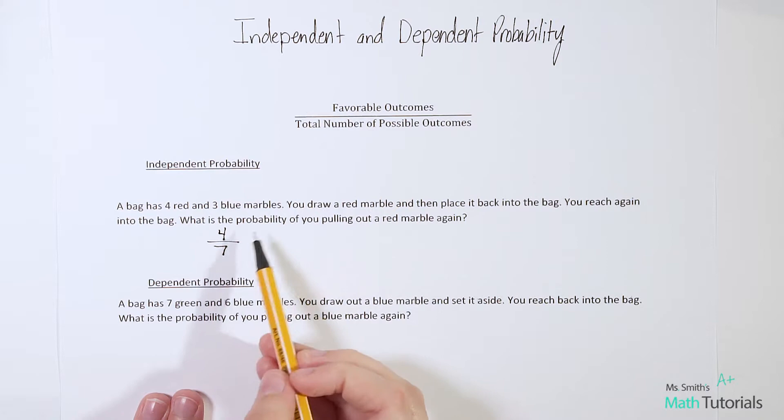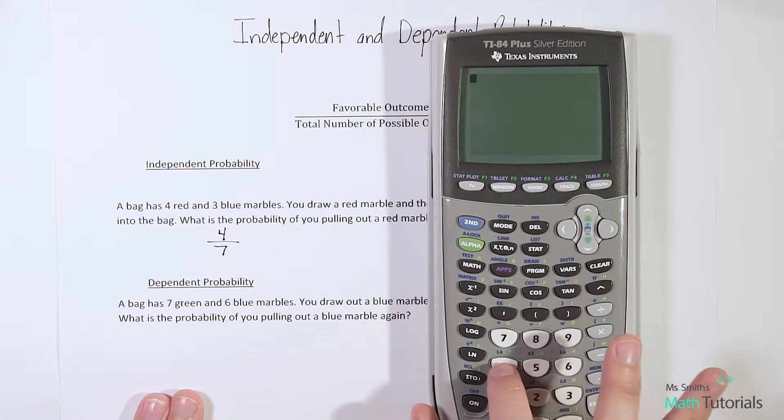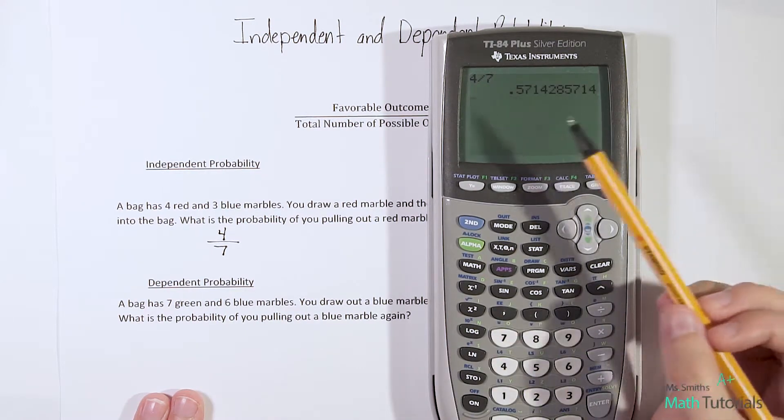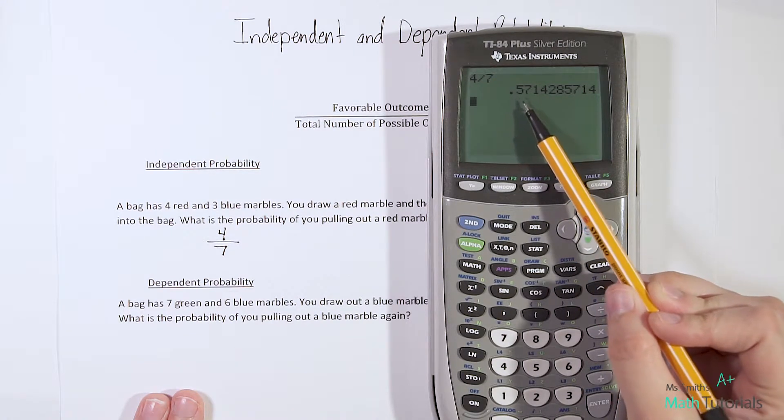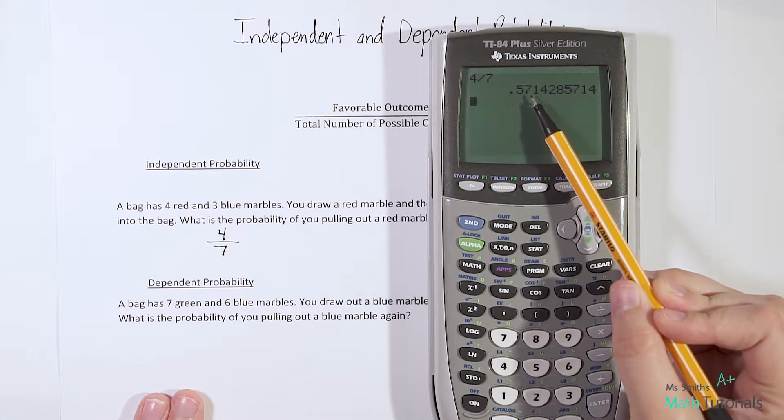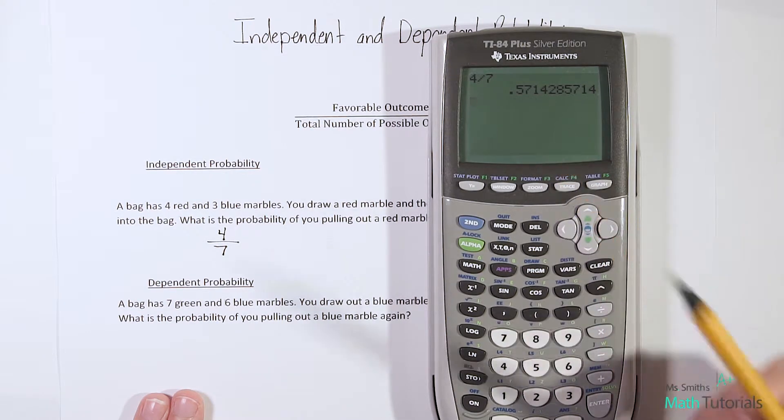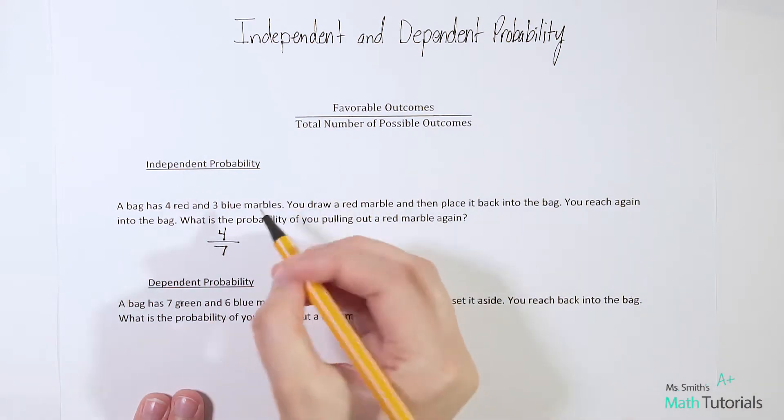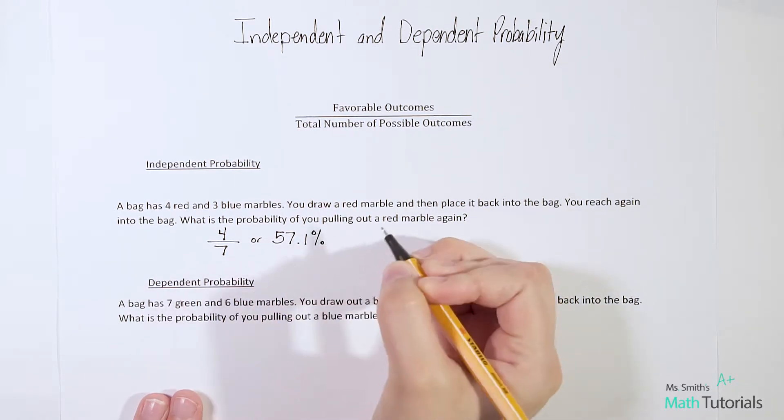So some of your teachers prefer you to write this as four over seven and some of them may prefer you to take a step further and do an actual percentage. So you would do four divided by seven and you get this long decimal. Remember to do a percent, I just take that decimal place and move it to the right two. So you round reasonably. This would be 57.1% rounded. So you might say four over seven or you might say 57.1%. That's the probability.